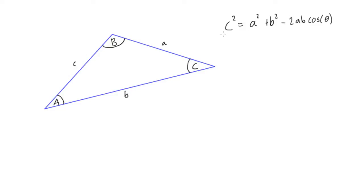Alright, what we're looking at here now is the law of cosines. I've written it up here, this is c squared equals a squared plus b squared minus 2ab times cos theta.